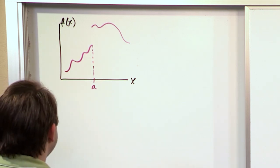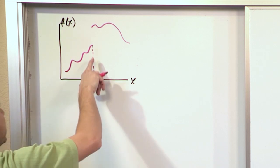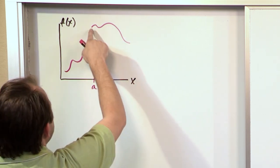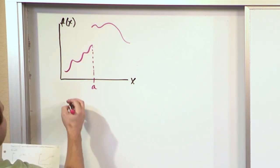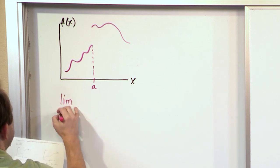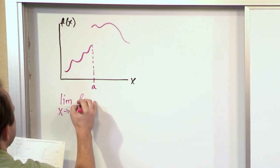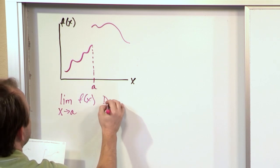So we know from experience that if we take the left-hand limit, we're going to get this value. If we take the right-hand limit, we'll get this value. Because they don't match, the limit as x approaches A of this function f of x does not exist.